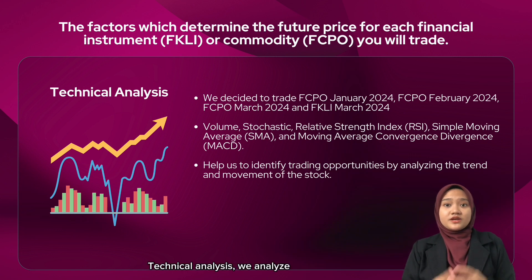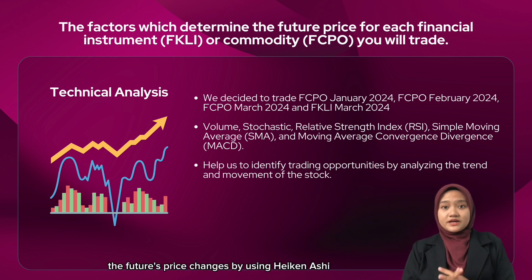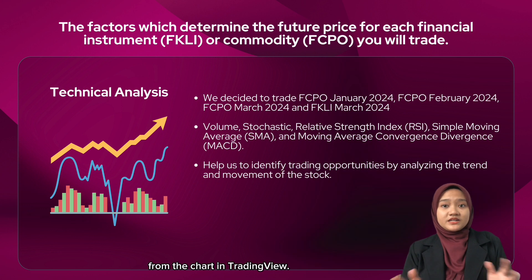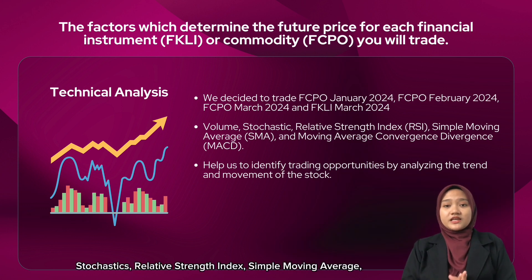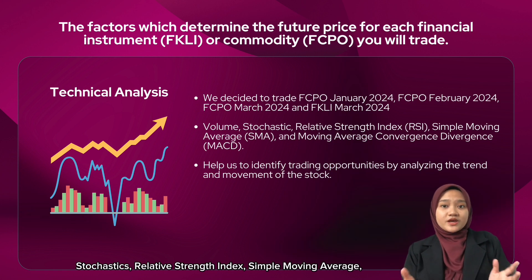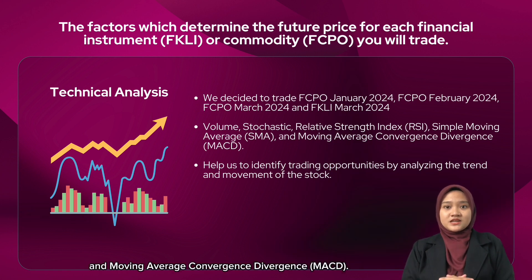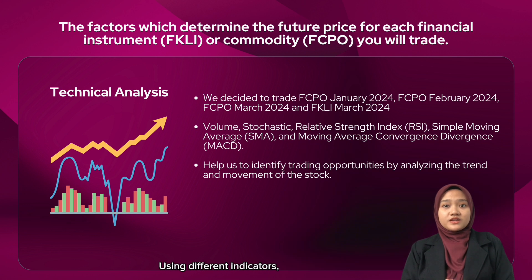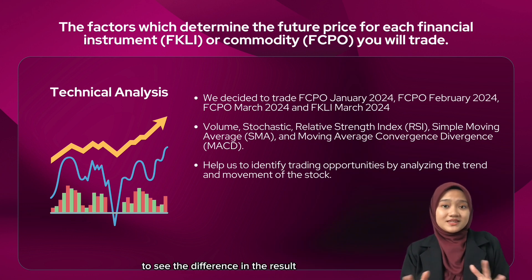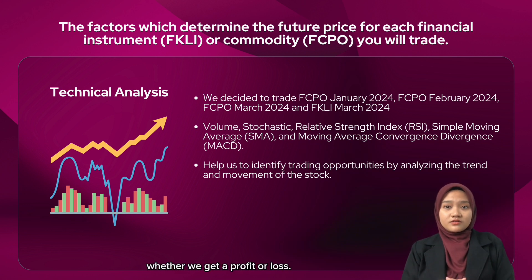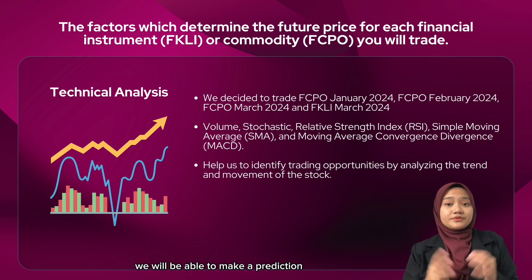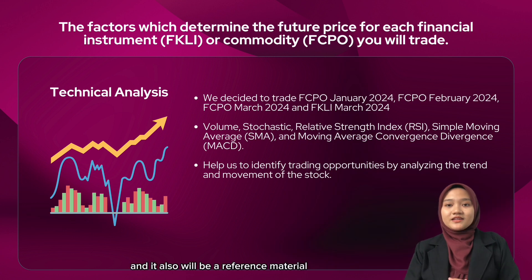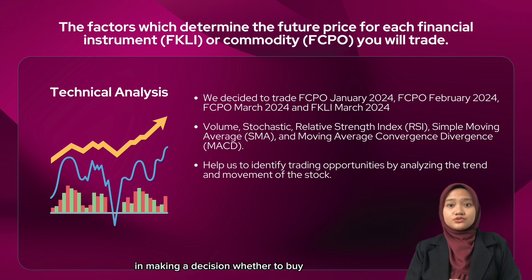For technical analysis, we analyzed futures price changes using Heikin Ashi charts from TradingView. Some technical indicators we used are volume, stochastics, Relative Strength Index (RSI), Simple Moving Average (SMA), and Moving Average Convergence Divergence (MACD). Using different indicators allows us to see differences in results, whether we gain profit or incur a loss. By using these indicators, we can make predictions of the future price and use them as reference material in deciding whether to buy, sell, or hold.